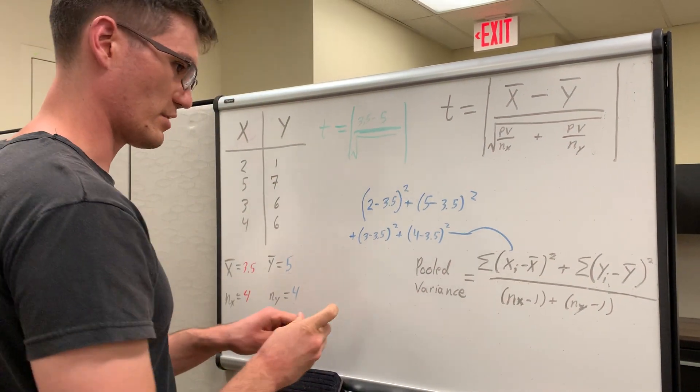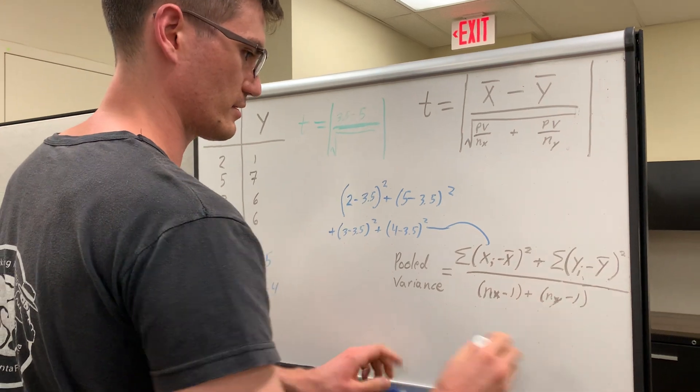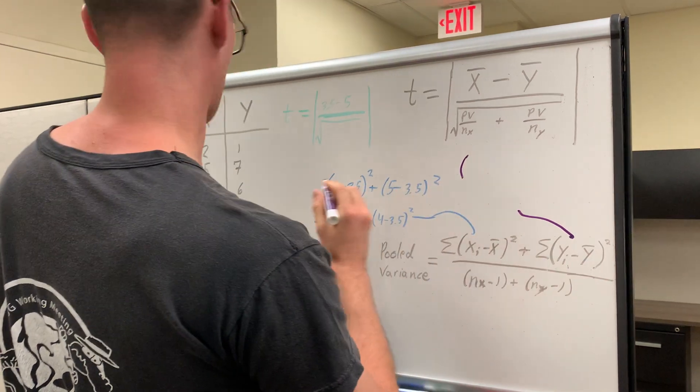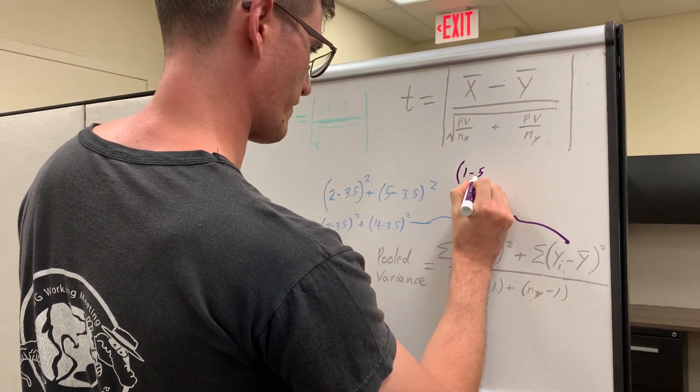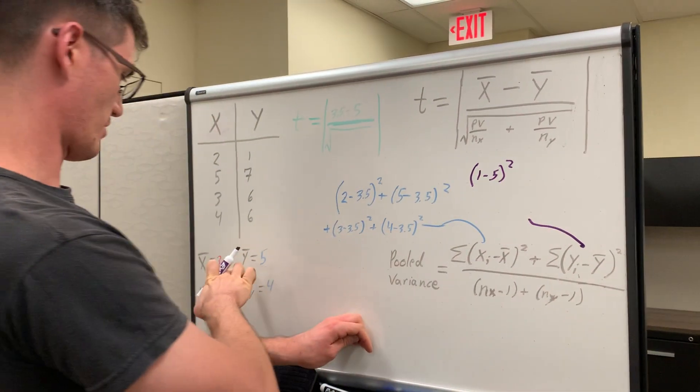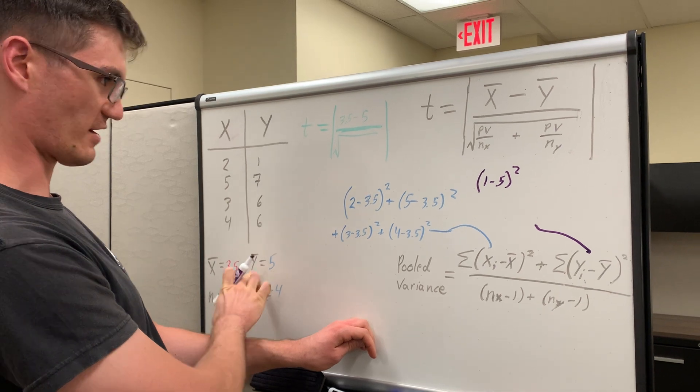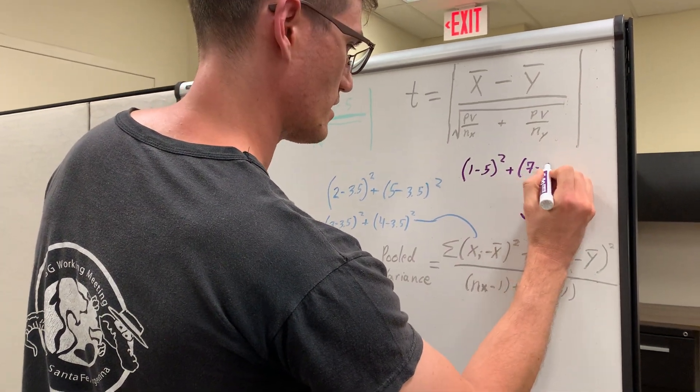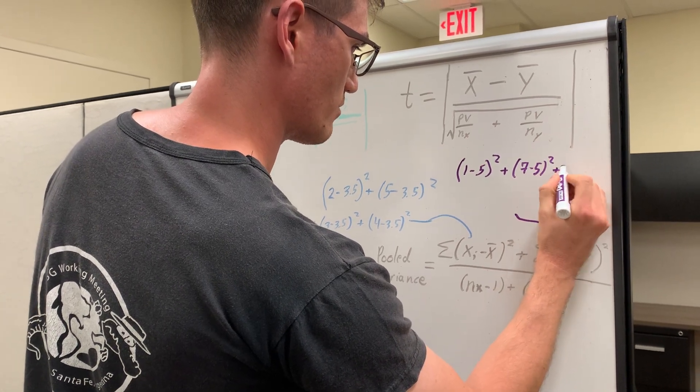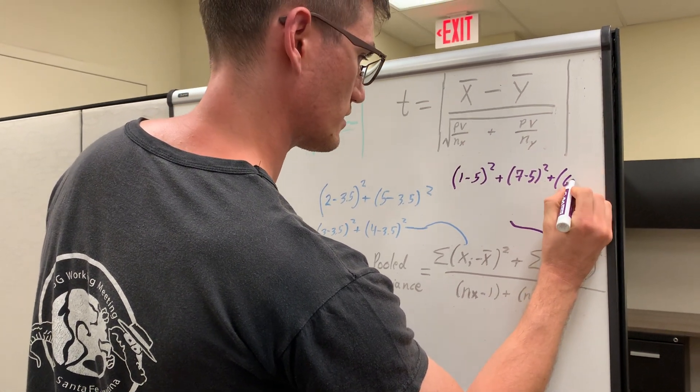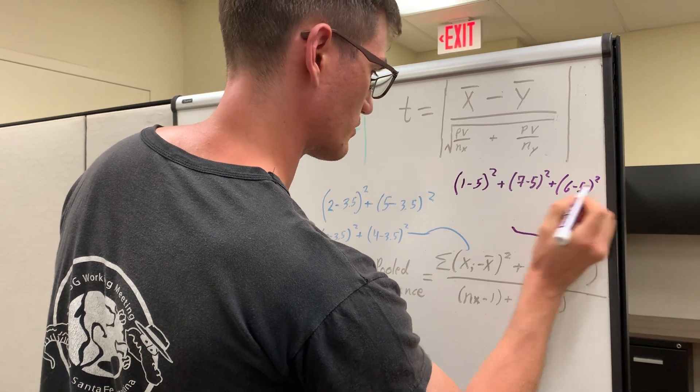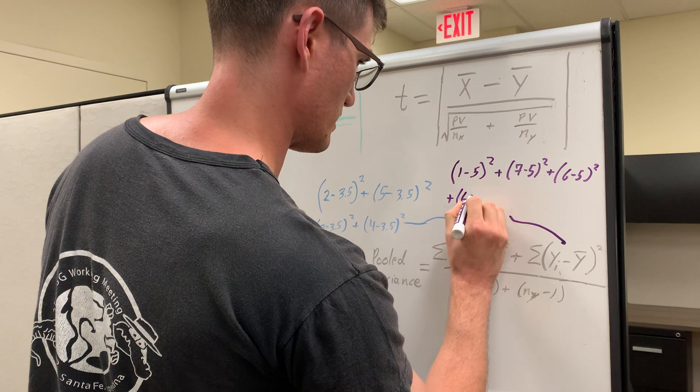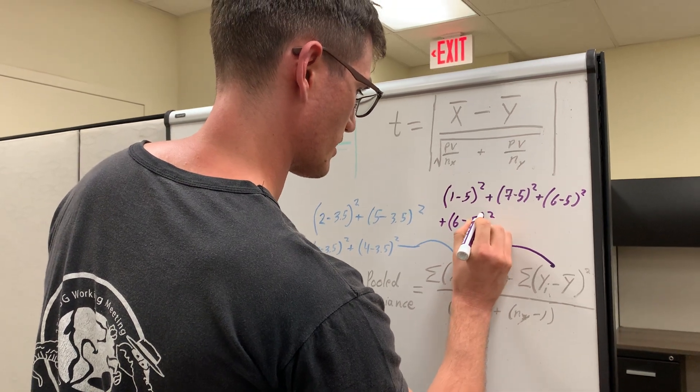Now, I've got to do the same thing again with the y treatment. Let's take another color here. So, this is going to be, what's our iteration? 1 minus 5 squared, because, again, remember, y-bar is 5, plus 7 minus 5 squared, plus 6 minus 5 squared, plus 6 again, minus 5 squared.